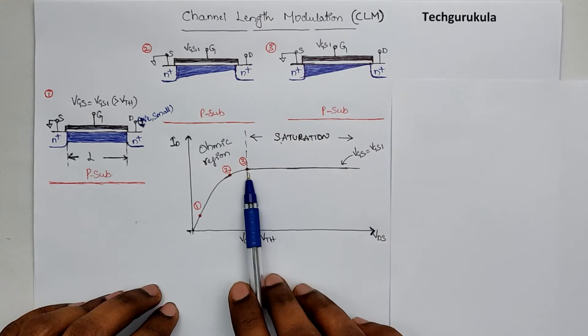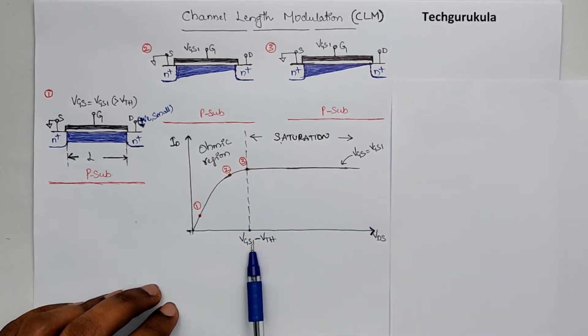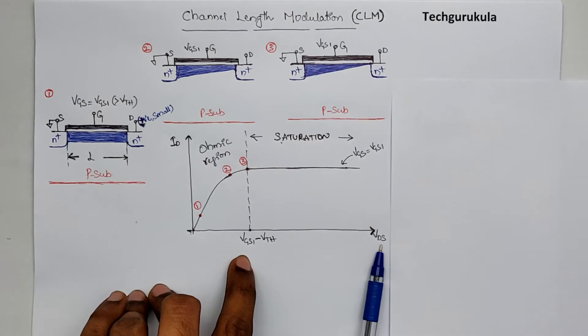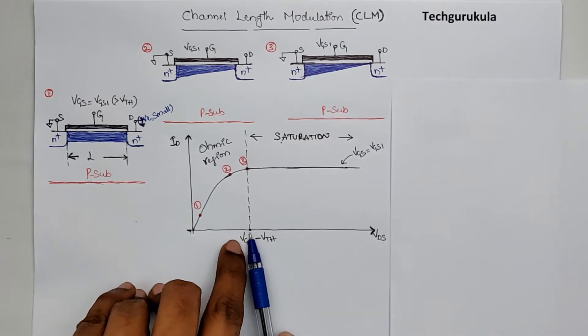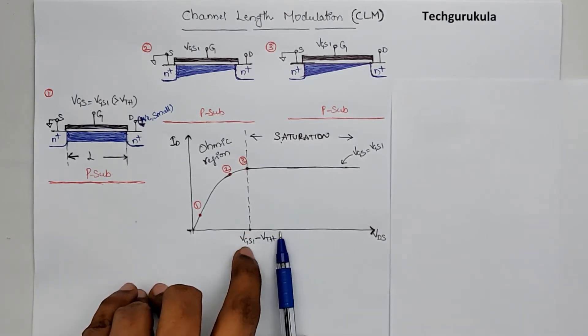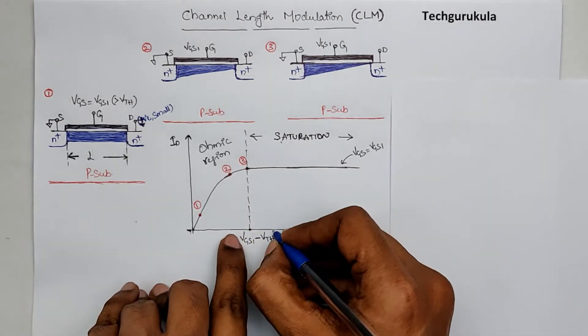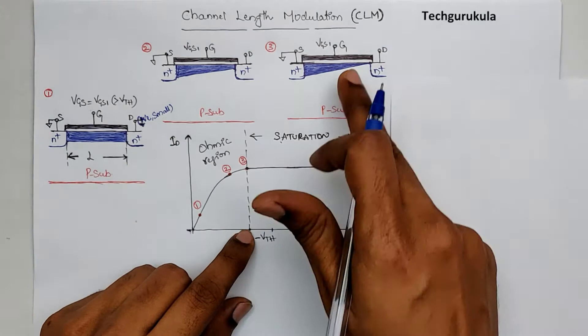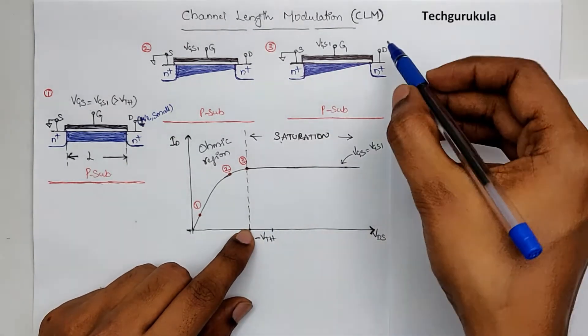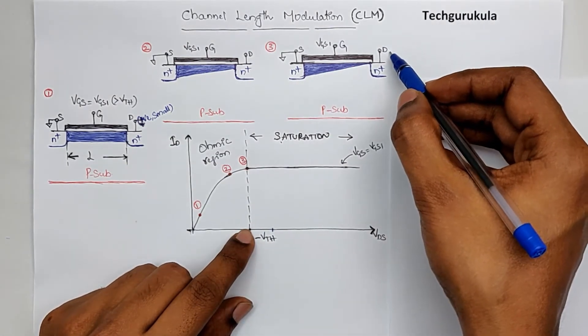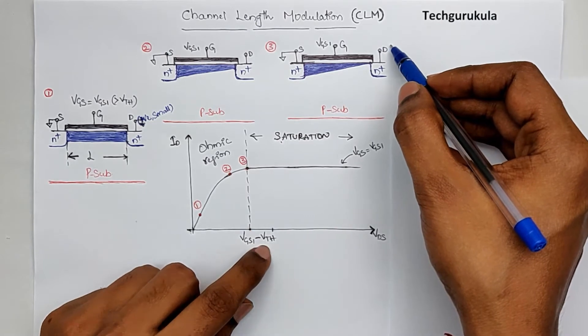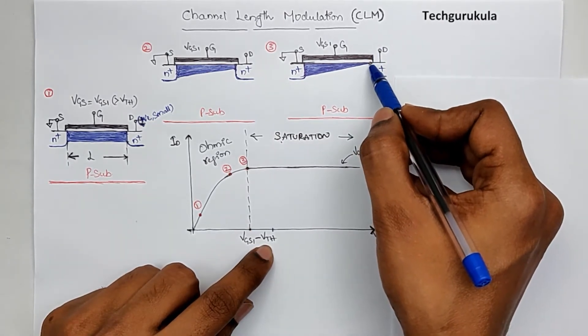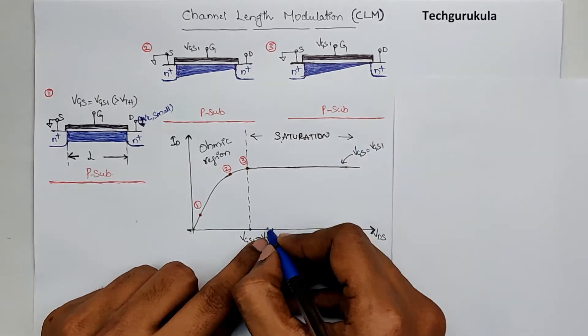So now we will see why this current wouldn't be constant beyond the overdrive voltage of VDS. Let's say VDS is above the VGS1 minus VTH here, let's say we have some voltage here. Now the question is what will happen to this channel? Let's just say we apply a potential by increasing this beyond VGS1 minus VTH. What will happen is here the potential wouldn't be VGS1 minus VTH, it will be this value.